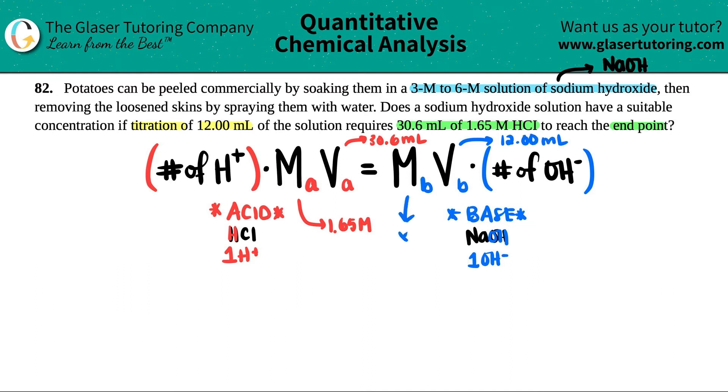Is it suitable? I don't know, let's solve for it. I'm just going to plug in everything from left to right. So the number of H pluses was just one—I'll just write that here, but you don't have to because anything times one is the same number. The molarity is 1.65, the volume is 30.6, and that equals—we're solving for that molarity of the base. We use 12 mL of it, times by one OH-.